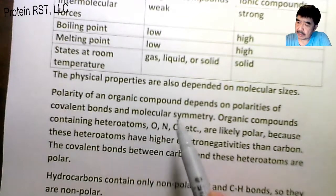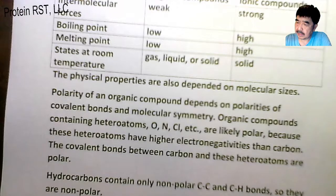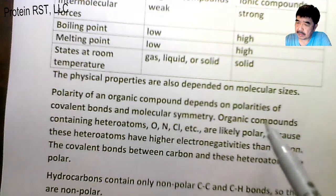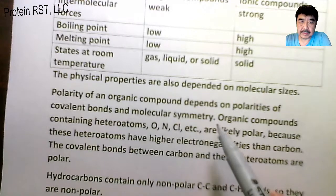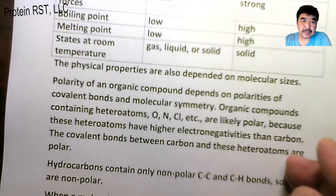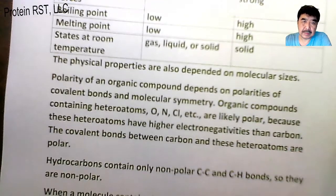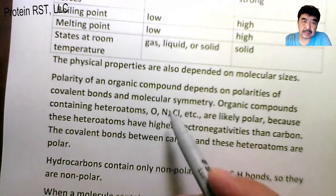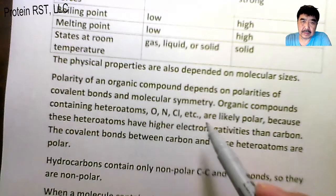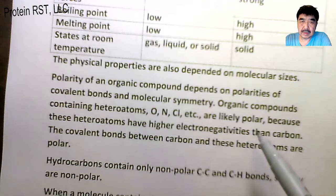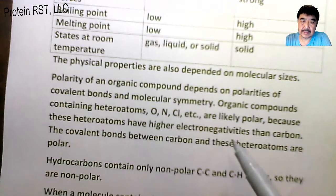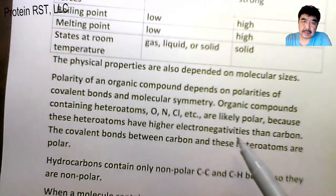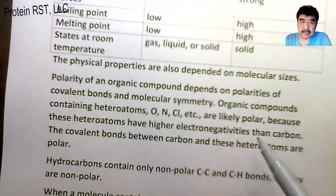Polarity of organic compounds depends on polarity of covalent bonds and molecular symmetry. Organic compounds containing heteroatoms - oxygen, nitrogen, chlorine, etc. - are likely polar because those heteroatoms have higher electronegativity than carbon.